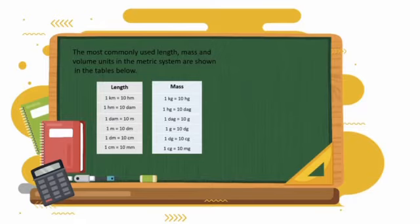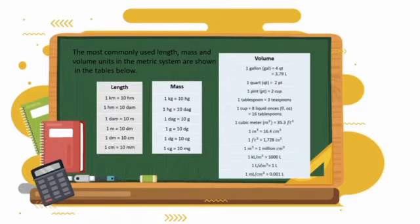For the volume, we have 1 gallon equals 4 quarts, 1 gallon also equals 3.79 liters, 1 quart equals 2 pints, 1 pint equals 2 cups, 1 tablespoon equals 3 teaspoons, 1 cup equals 8 liquid ounces or 16 tablespoons. 1 cubic meter equals 35.3 cubic feet, 1 cubic inch equals 16.4 cubic centimeters, 1 cubic foot equals 1,728 cubic inches, 1 cubic meter equals 1,000,000 cubic centimeters, 1 kiloliter per cubic meter equals 1,000 liters, 1 liter per cubic decimeter equals 1,000 milliliters, and 1 milliliter per cubic centimeter equals 0.001 liters.